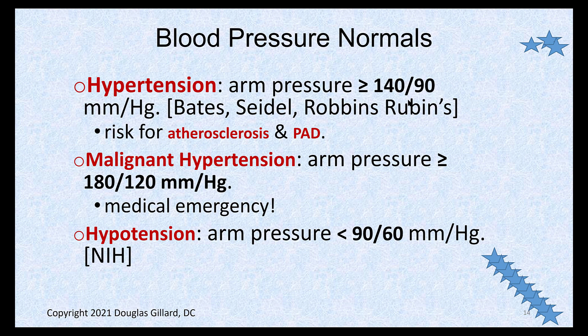If the blood pressure is 90 over 120, they still have hypertension — specifically diastolic hypertension. Malignant hypertension is a medical emergency: if systole reaches 180 (e.g., 180/85) or if diastole reaches 120, either of those numbers triggers an emergency room referral.